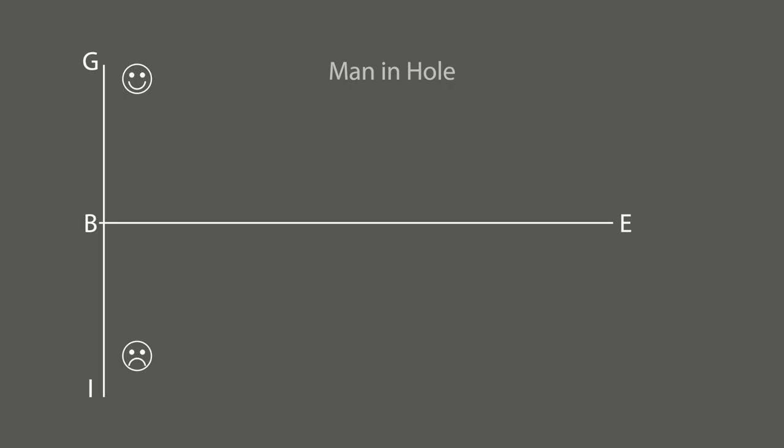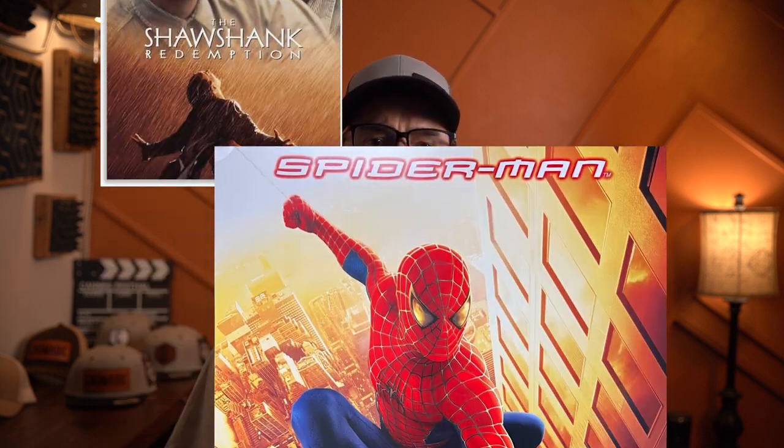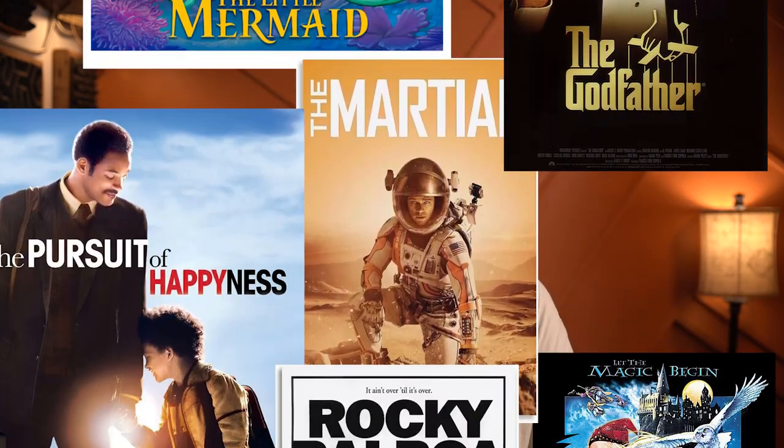Like the Man in a Hole shape, for example — it's used repeatedly. It's a simple yet effective structure. A character starts off doing just fine, then suddenly they fall into a problem, like a crisis, a challenge, or a mistake, but they manage to climb out of it, often wiser or even better than before. This shape is incredibly popular because it mirrors real-life struggles and triumphs.